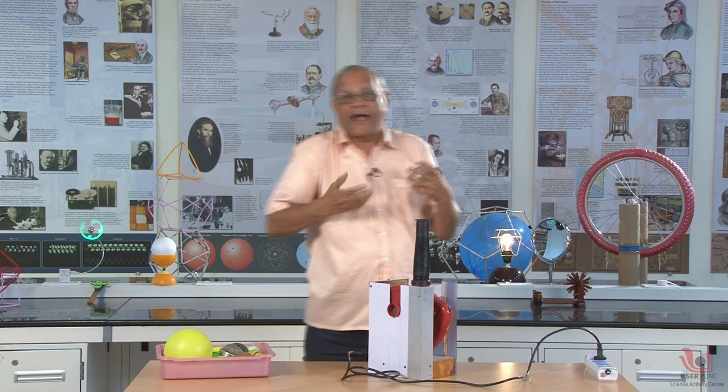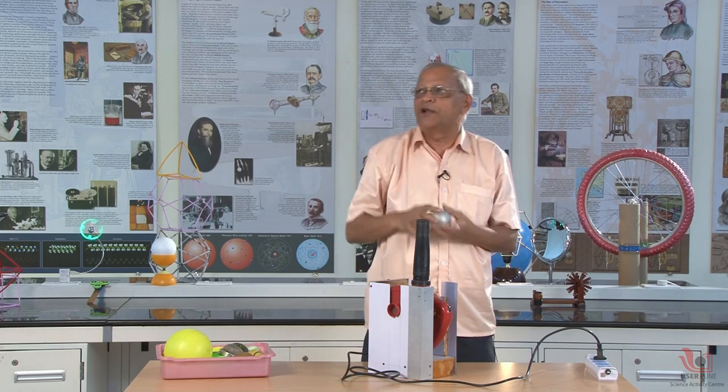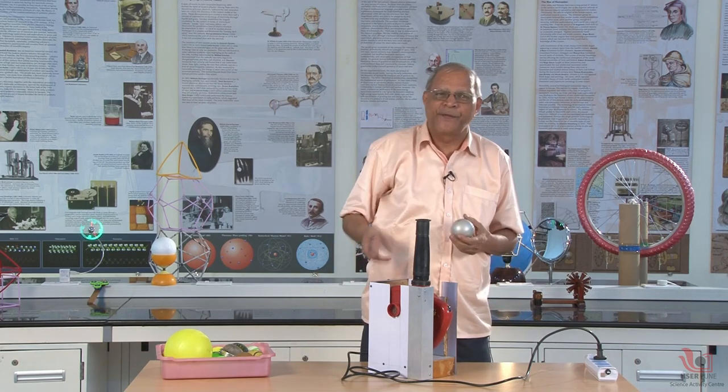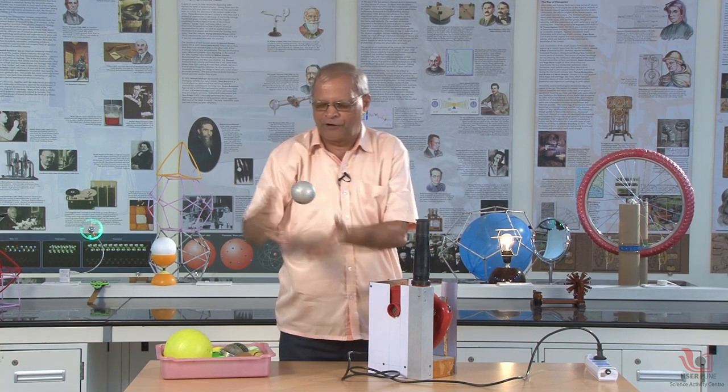But if I keep the ball here and leave it, it comes down. It is called free fall. Now, what is free fall? It starts with zero velocity and the velocity goes on increasing. Why velocity increases? Because it has got acceleration. And why is there acceleration? Because of gravity. So, the gravity will make acceleration and the ball will go on having more and more velocity and it is called as free fall.